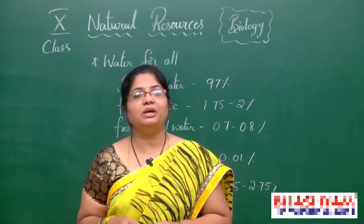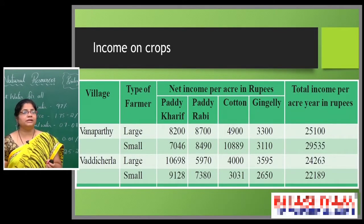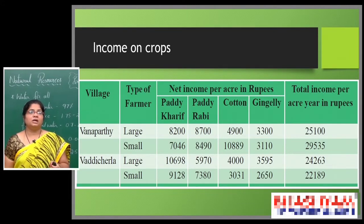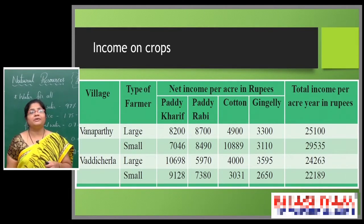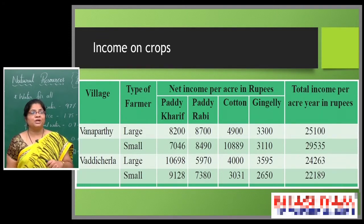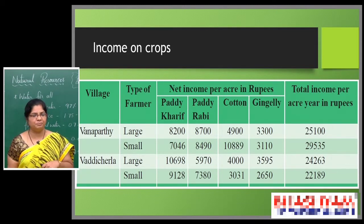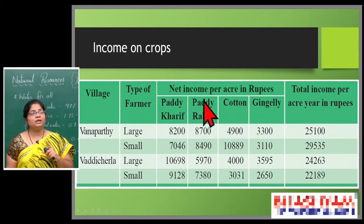In Vanaparthi and Vadicharala, we are able to see the income in different ways — for large farmers and small farmers. In Vanaparthi, the large farmer's total income per acre per year is 25,100 rupees. For the small farmer it is 29,535 rupees. In Vadicharala, when compared with Vanaparthi, it is very less — 24,263 rupees for the large farmer, and only 22,189 rupees for the small farmer. Here you are able to see different types of crops also: paddy, cotton, and gingelly.